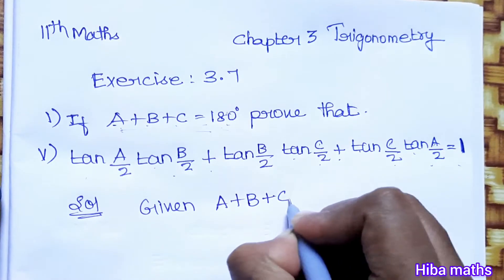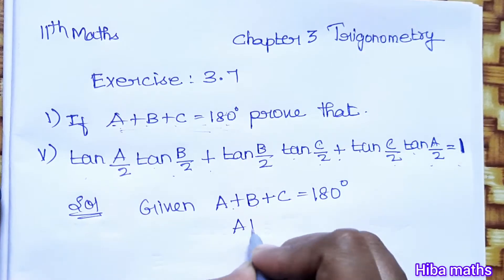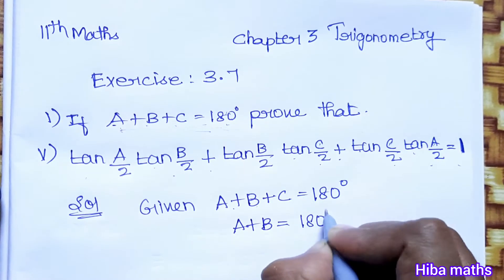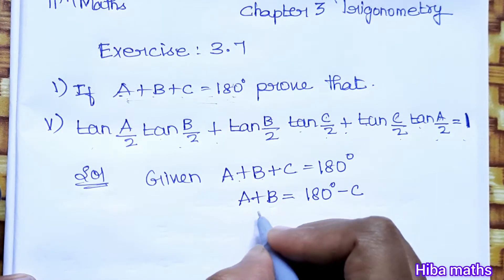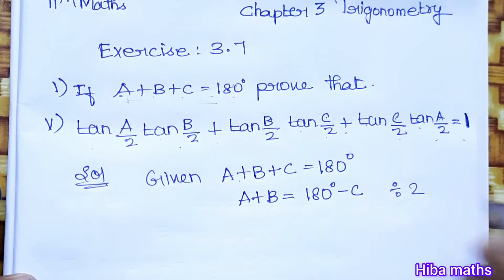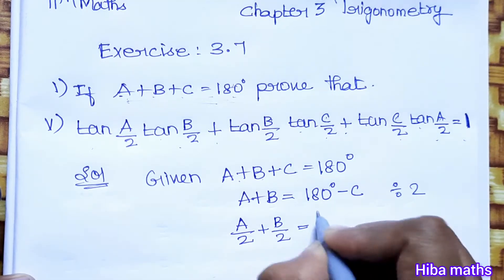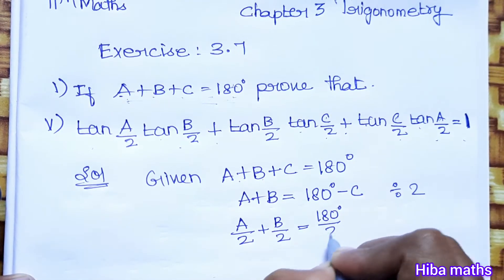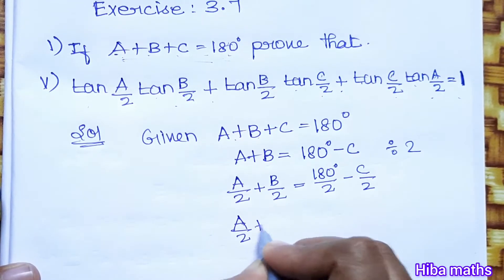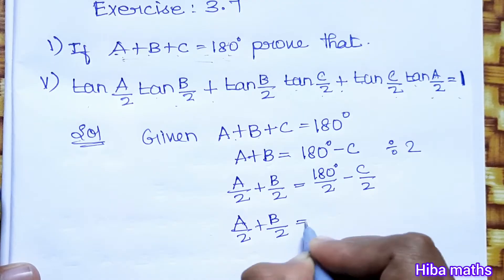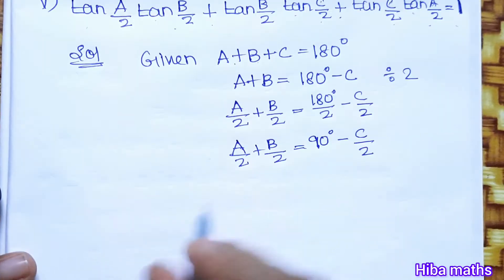Given: a plus b plus c is equal to 180 degrees. We take a plus b to the other side: a plus b equals 180 minus c. Now divide both sides by 2. So a by 2 plus b by 2 equals 180 by 2 minus c by 2, which gives a by 2 plus b by 2 equals 90 degrees minus c by 2.